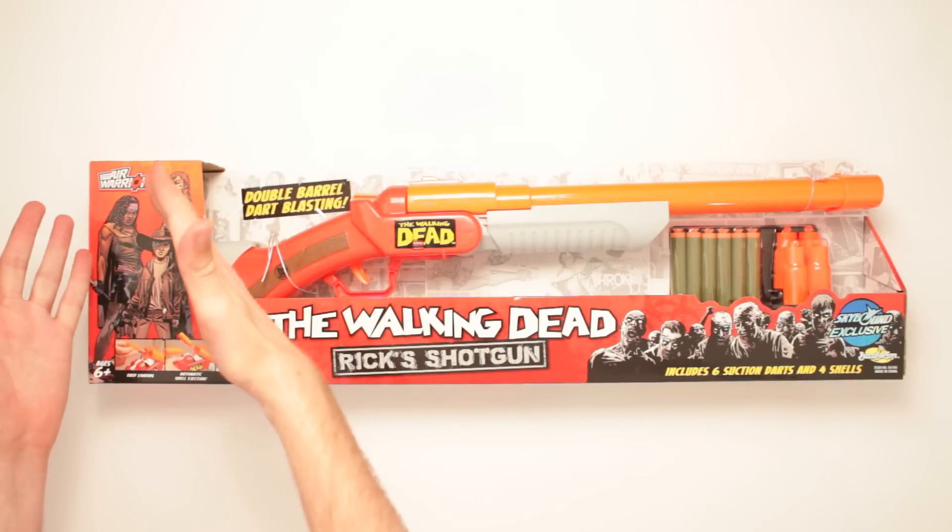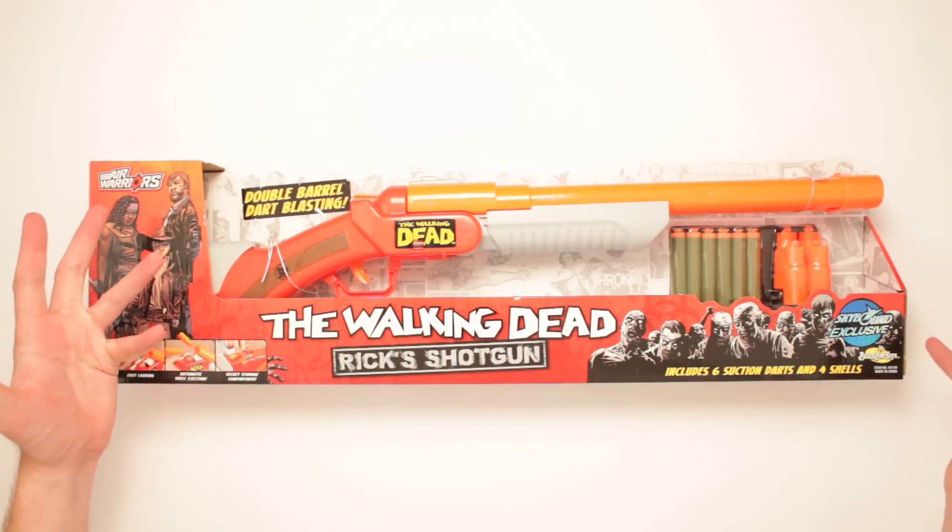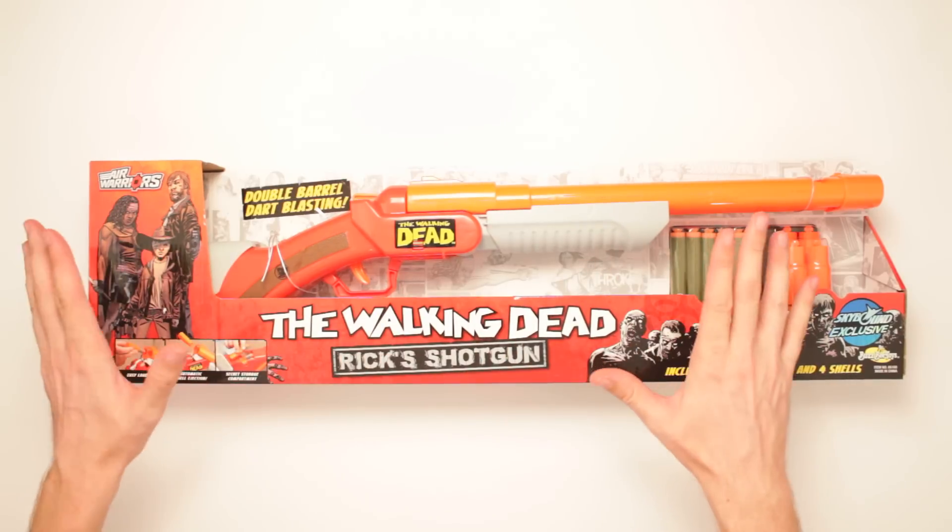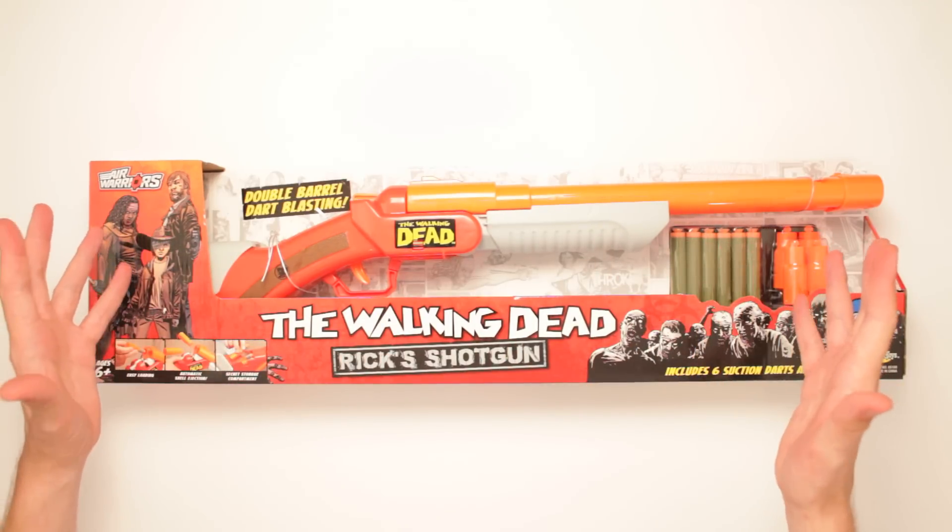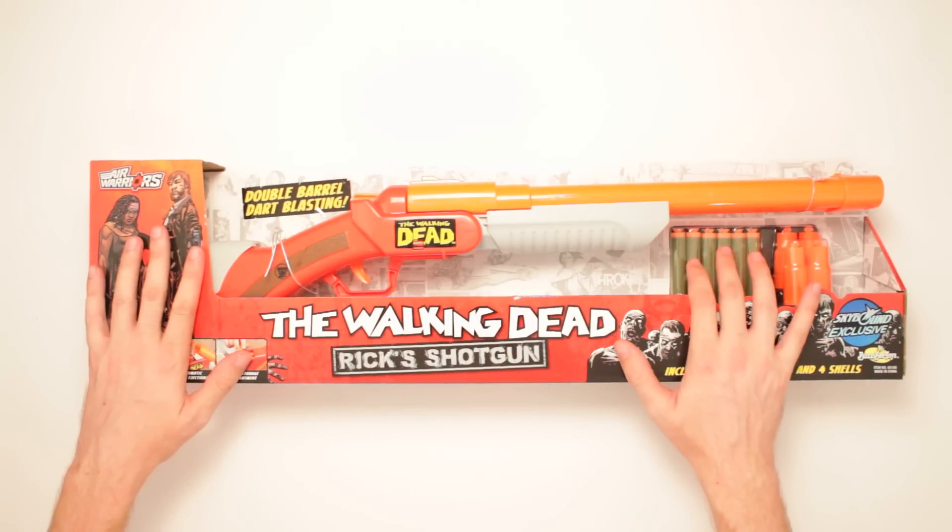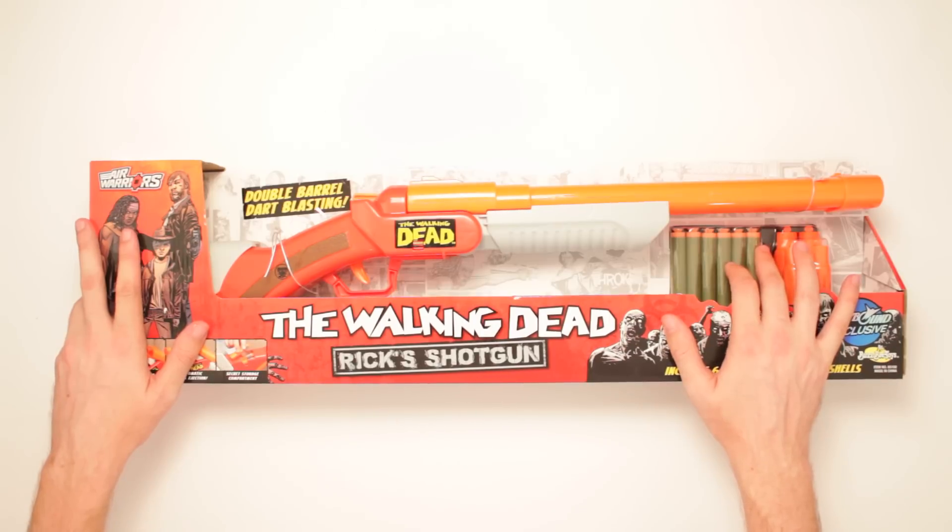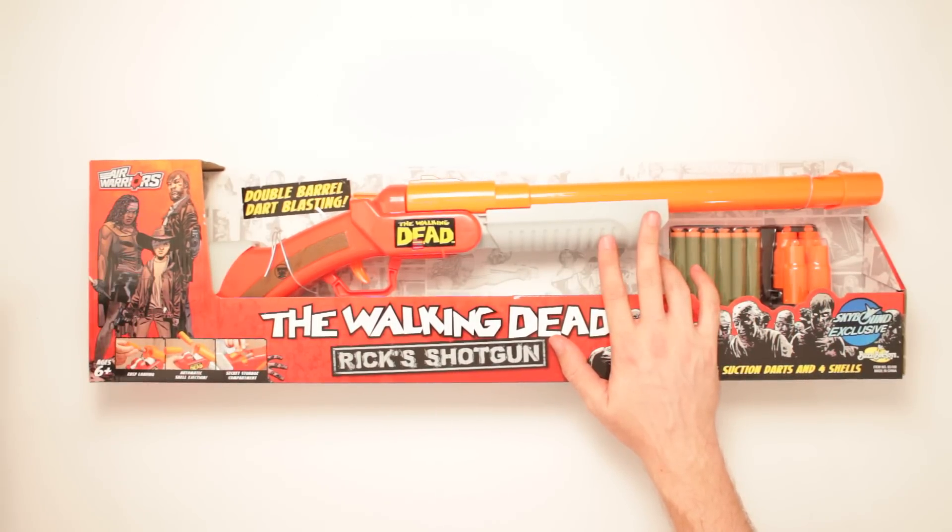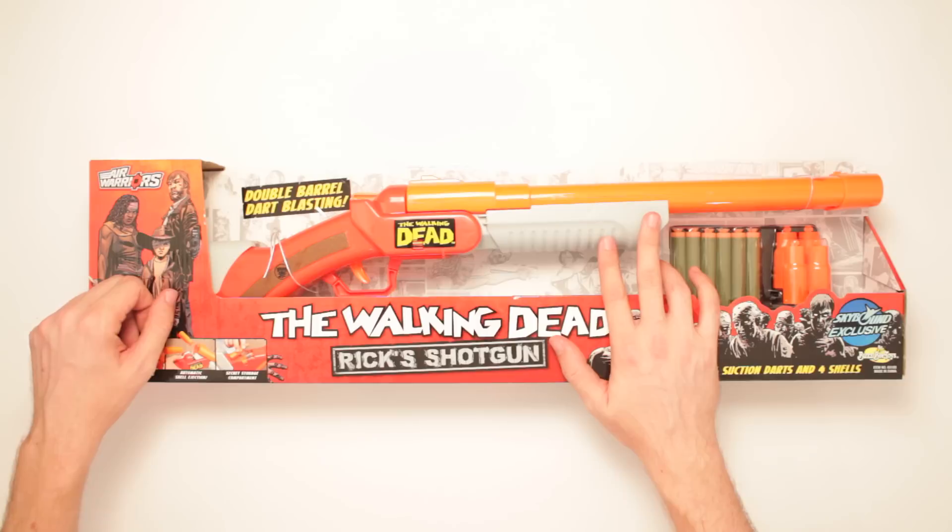This is Air Warriors Skybound exclusive, The Walking Dead Rick's Shotgun. We're into the big time now, we're talking Rick Grimes. What am I thinking of the Simpsons character? Oh my gosh, I just had a total crisscross in my brain. I don't know, it's Rick! It's good ol' Rick and Michonne and Carl!